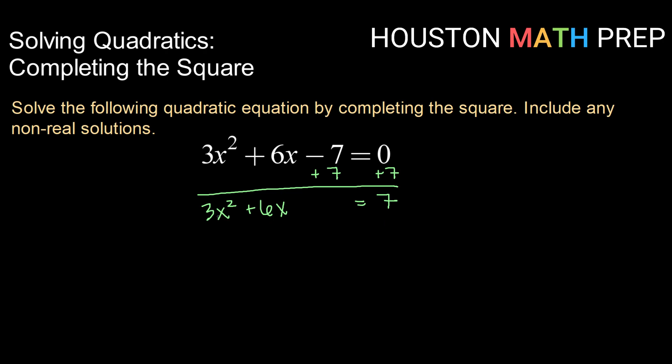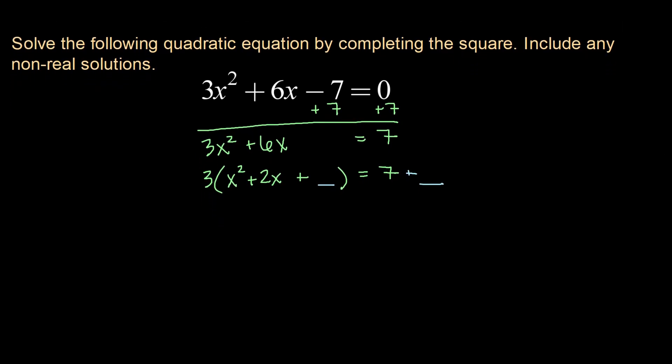Now, we cannot complete the square on our perfect square trinomial with a coefficient other than one. So what we need to do is from the left side, we need to factor out that lead coefficient of 3. So that makes 3 times x squared plus 2x plus, and we'll set up to go ahead and add our value on both sides. Completing the square only works when your coefficient for your x squared is 1.